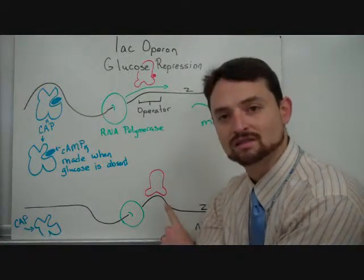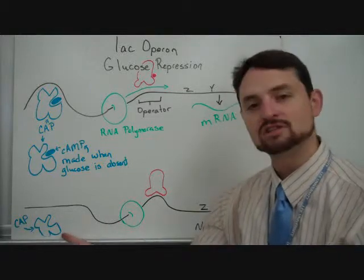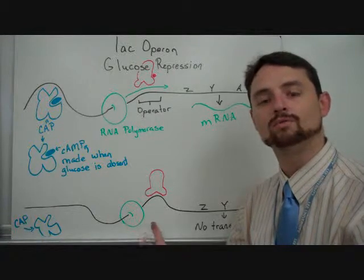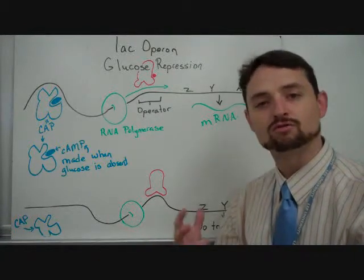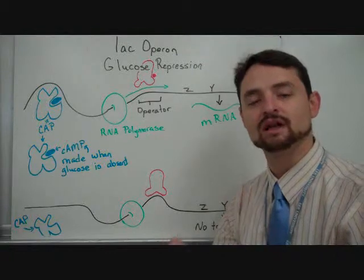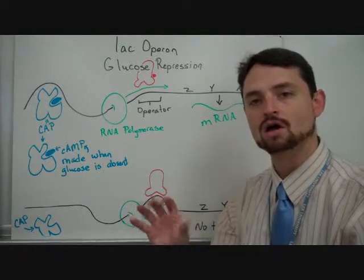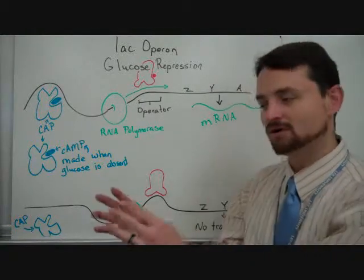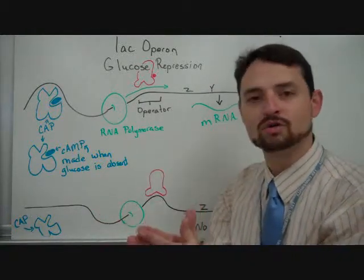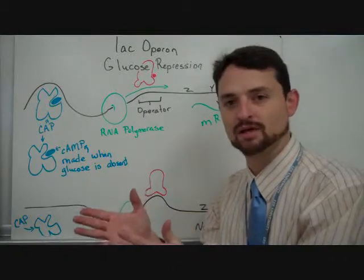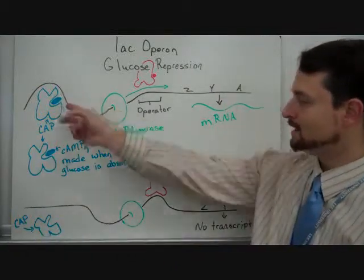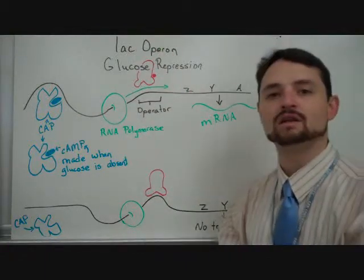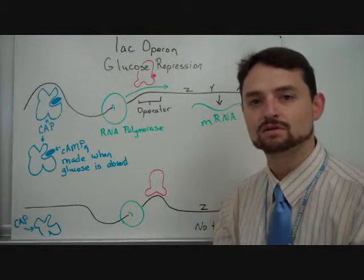Even if lactose is present, if glucose is also present, what we find is that the lac operon will be turned off. Now, this will be related to the fact that the cell gets more energy out of glucose overall than it does out of lactose. So, if glucose is present, it focuses on breaking down glucose. When glucose runs out, if lactose is present, then this will bind, this will come off of the operator, and you'll get the enzymes needed to break down lactose.